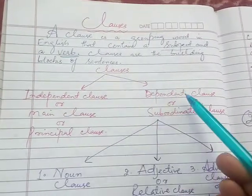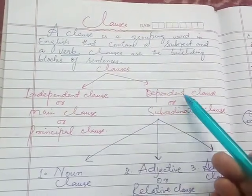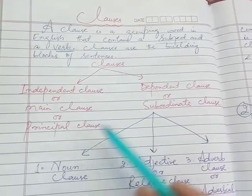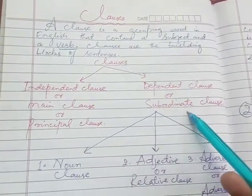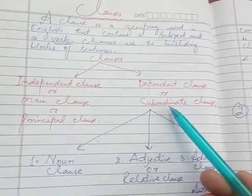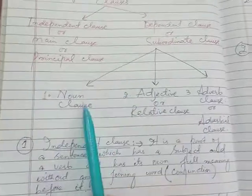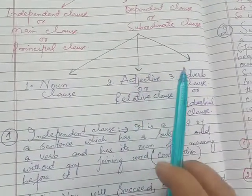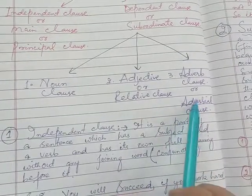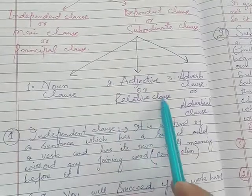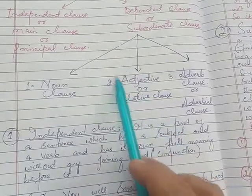The two types are: independent clause and dependent clause. Independent clause is also called a main clause or principal clause, and dependent clause is also called a subordinate clause. The dependent clause or subordinate clause is further divided into three important types: noun clause, adjective or relative clause, and adverb clause or adverbial clause.